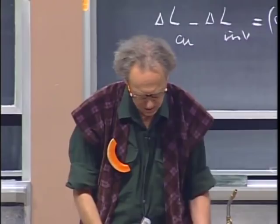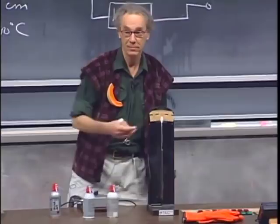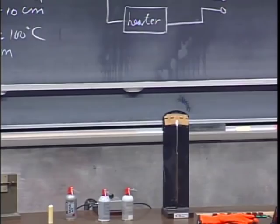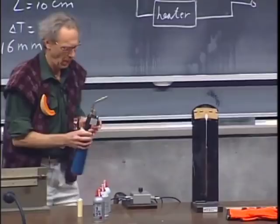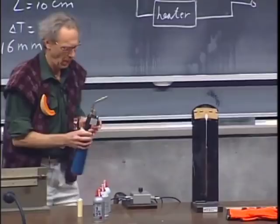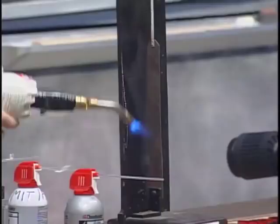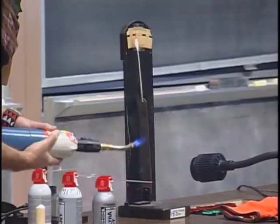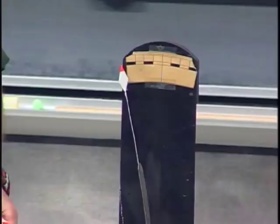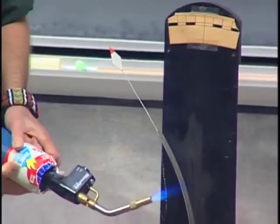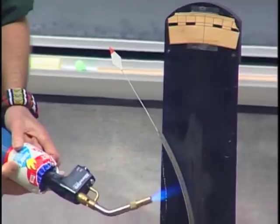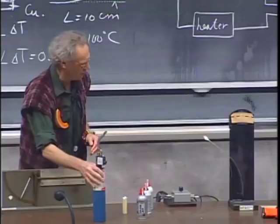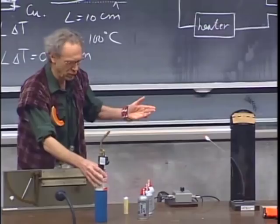I have here a bimetal — one side is aluminum and the other side is iron. When I heat it, you will see that it starts to bend. You could use it as a thermometer — it is the idea of a thermometer, of course.